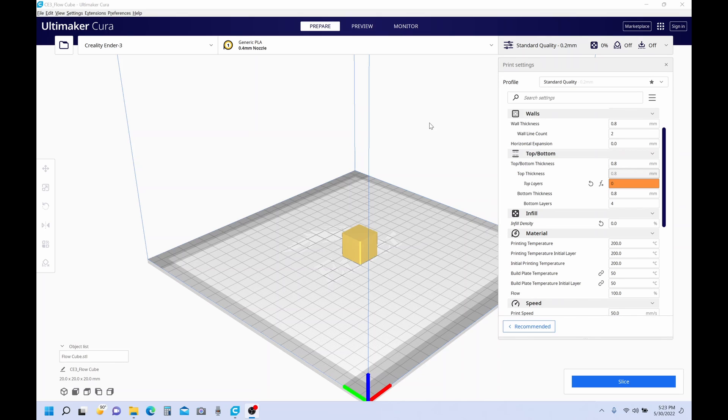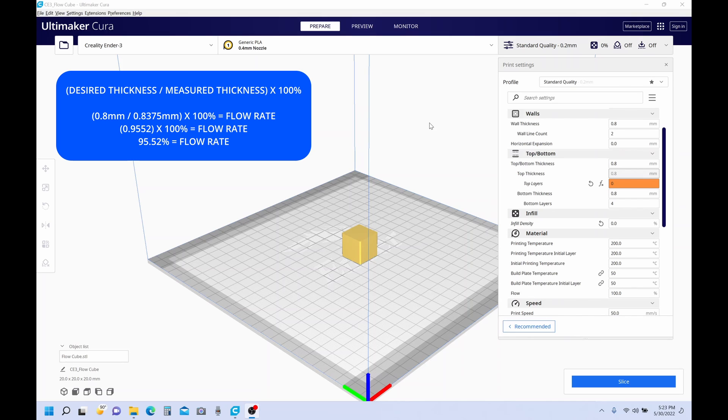We need to apply that to our slicer profile. To do this, we'll take the desired wall thickness. In other words, the wall thickness we were shooting for, 0.8. And we'll divide that by the average of what we measured, 0.8375. This is going to give us 0.9552. We'll multiply that by 100 for a result of 95.52%. This is going to be our new flow rate. And we'll enter it here. And reslice.